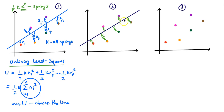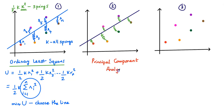What does attaching the springs perpendicularly lead to? Is this the same as ordinary least squares, or is this something else? I encourage you to pause the video and think about what this is going to mean. Each of these topics, even linear regression, can be studied in great detail. This is related to a concept known as Principal Component Analysis, or PCA as it's commonly called. I hope this gives you some idea about what PCA is. By no means am I saying this is the same as Principal Component Analysis, but hopefully now that I've given you this new term, it gives you some direction on next steps.